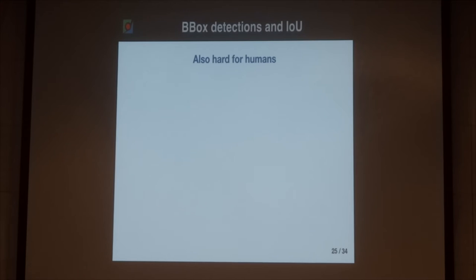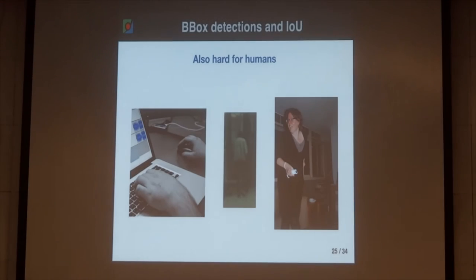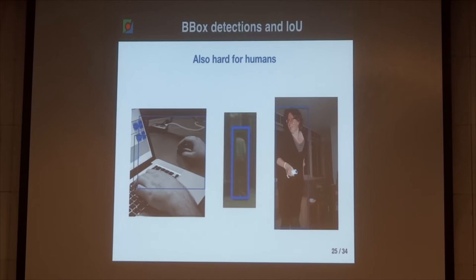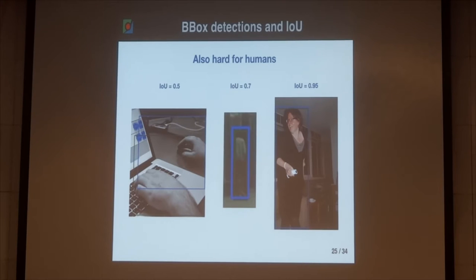If we look at the AP metric using the standard Pascal and ImageNet competition metric at IOU 0.5, there's a bounce to almost 60% AP for the top team. Comparing this to AP at 0.75, there's almost a 20% gap, characterized by objects that are correctly detected but not perfectly localized. To give a more refined metric, we averaged over all possible IOU values.